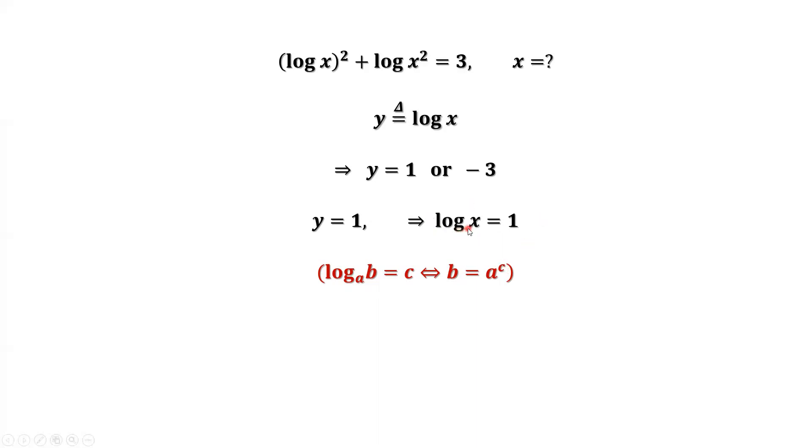Look at our result. What is the base here? 10. What is c here? That's the 1. What is b? b is our x. This implies b equals the base 10 to the power 1, which is 10. So this is our first result for x when y equals 1.